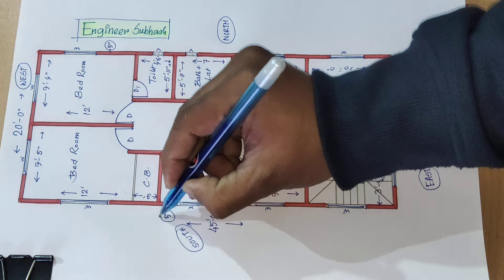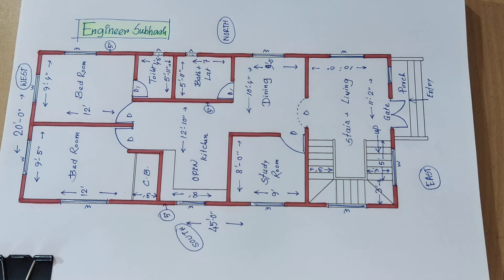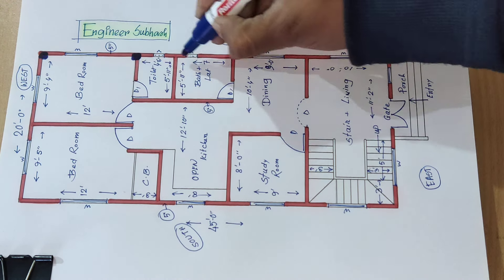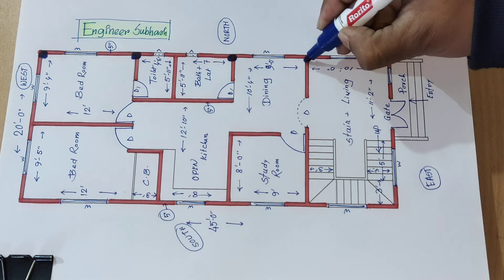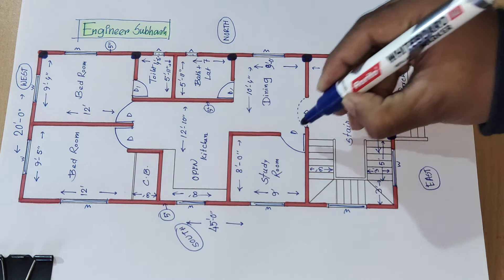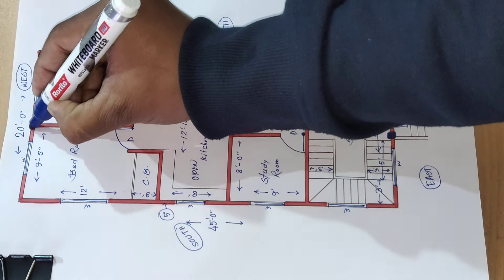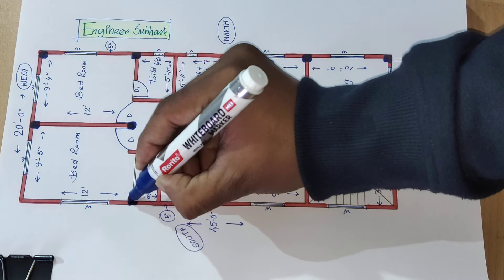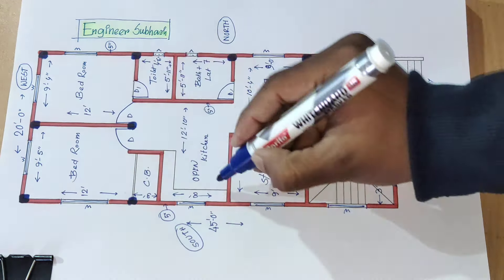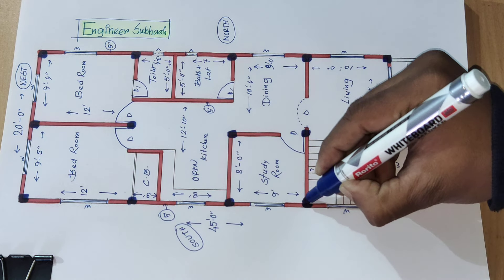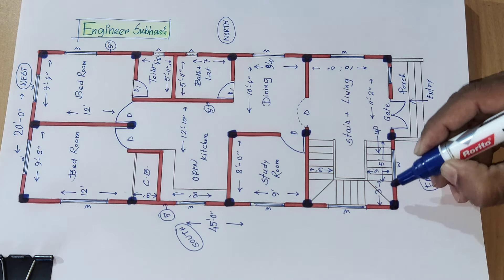5 inch wall, outside wall, 5 inch wall. This spacing we will provide column: 1, 2, 3, 4, 5, 6, 7, 8, 9, 10, 11, 12, 13, 14, 15.